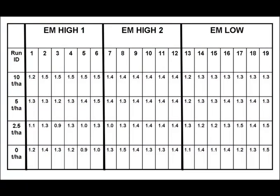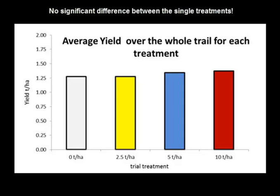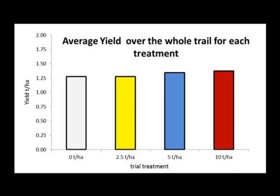Once you have extracted all the data and entered it into your table, you can start to make some summaries. Let's first consider the overall trial result — combining the extracted data yields from each of the treatment runs regardless of the EM zone. Here we have summarised the averages into a single graph. You can see there is very little difference between each of the treatments of 0, 2.5, 5, and 10 tonnes per hectare application of gypsum.